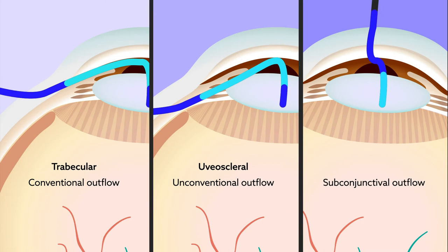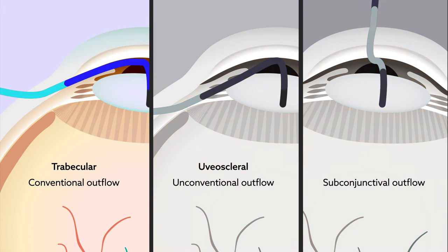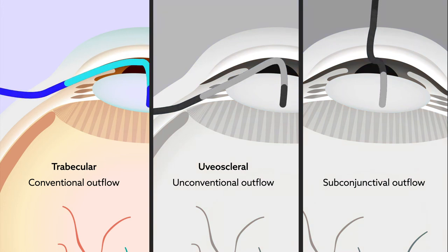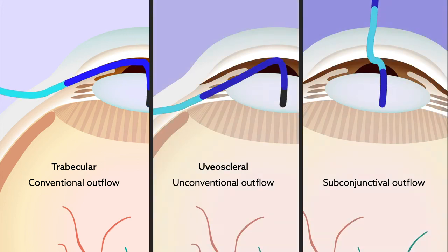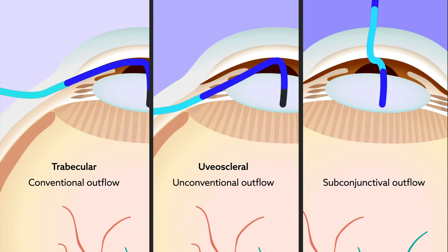Current methods for imaging these pathways are at varying stages of development, with conventional outflow imaging being the most advanced. Nevertheless, each route possesses a unique biology that can be leveraged in the quest for more knowledge about aqueous humor outflow.